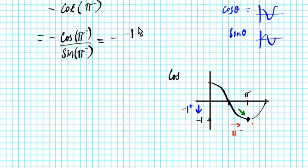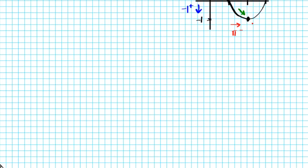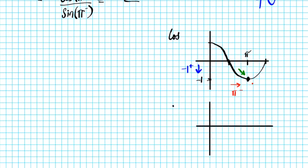So cosine of pi from the left is simply negative one from the right. For the denominator, we call on the sine graph to evaluate what sine of pi from the left is. Let's look at what the sine graph looks like to compute sine of pi from the left.